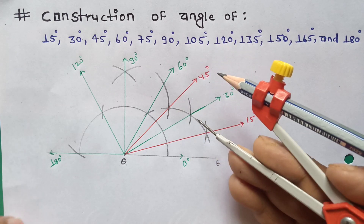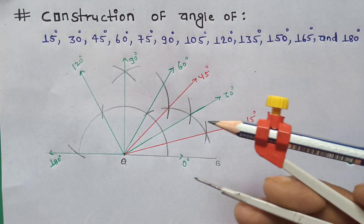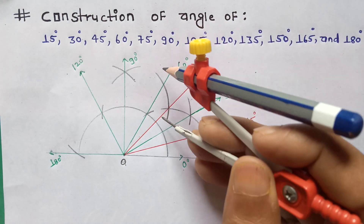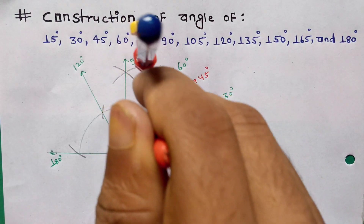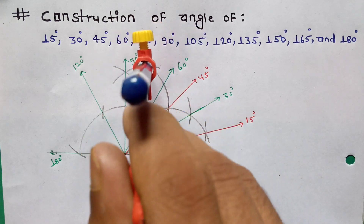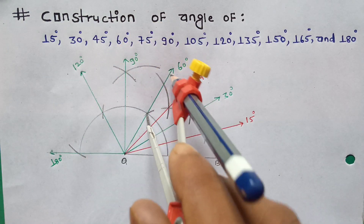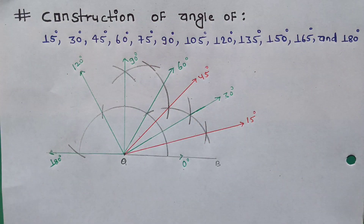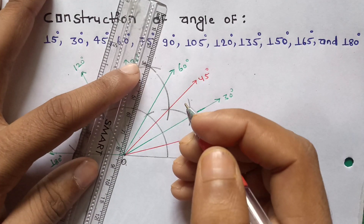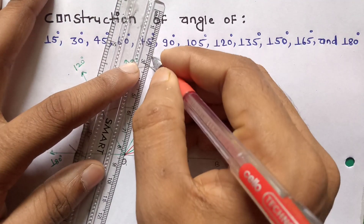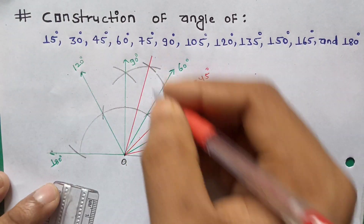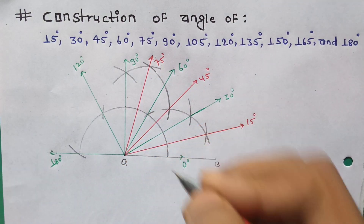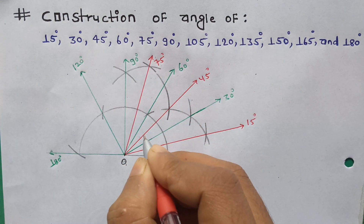Now I am going to draw 75 degrees. Cut from 60 degrees and from 90 degrees. The cutting point is 75 degrees. This is 75 degrees. We can write here: 15 degrees, 30 degrees, 45 degrees, 60 degrees, 75 degrees, 90 degrees.